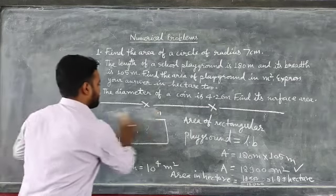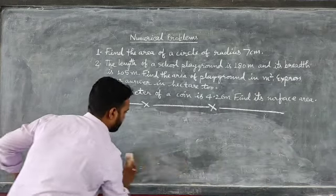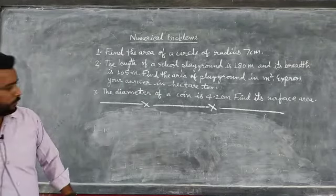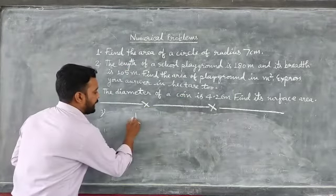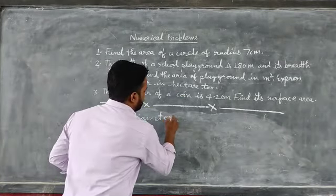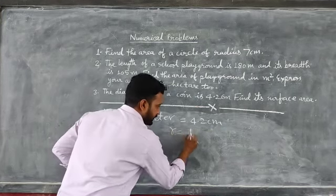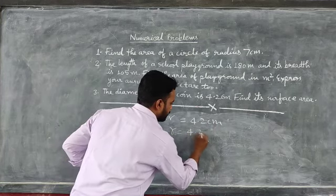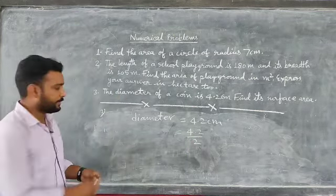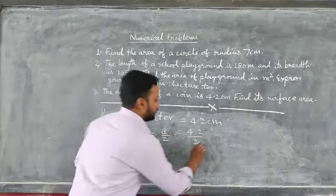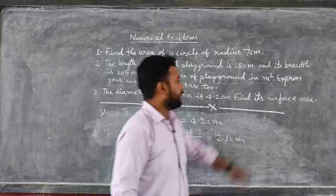Question number 3: The diameter of a circle is given as 4.2 centimeters. First, find the radius: radius equals diameter divided by 2, so radius equals 4.2 divided by 2, which gives 2.1 centimeters. Then find the surface area.